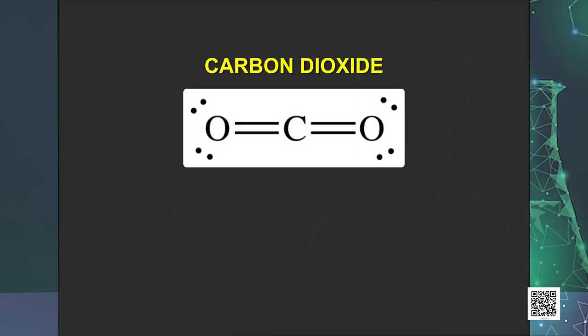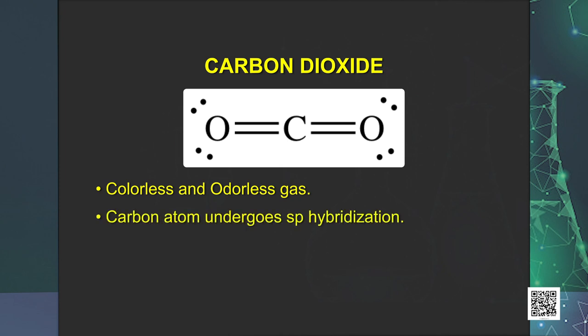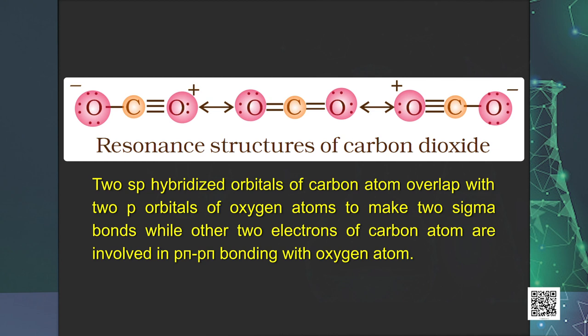Next oxide of carbon is carbon dioxide. Carbon dioxide is a colorless and odorless gas. In the structure of CO2 molecule, carbon atom undergoes sp hybridization. Two sp hybridized orbitals of carbon atom overlap with two p orbitals of oxygen atom to make two sigma bonds, while other two electrons of carbon atom are involved in p pi p pi bonding with oxygen atom. This results in its linear shape with both CO bonds of equal length, 115 picometer, with no dipole moment.